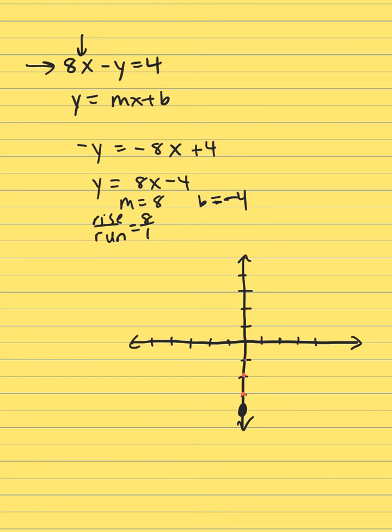Counting up the rise: 1, 2, 3, 4, 5, 6, 7, 8 — and run 1. There's your line.